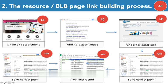Step two: we're going to assign the link prospector to go out and find resource page opportunities. They're going to use search engine operators looking for things like 'email marketing resources' or 'best resources for email marketers.' When they get to a resource page, they're going to check it for a dead link using a simple browser plugin that instantly scans the page and alerts them if there's a dead link.